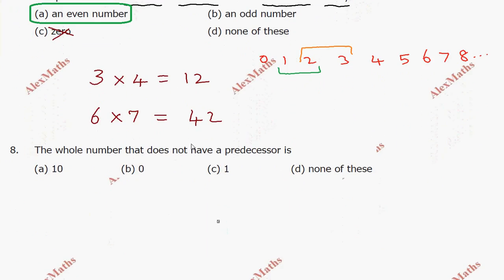Question number 8: the whole number that does not have a predecessor. The whole number that does not have a predecessor is 0. Option B.